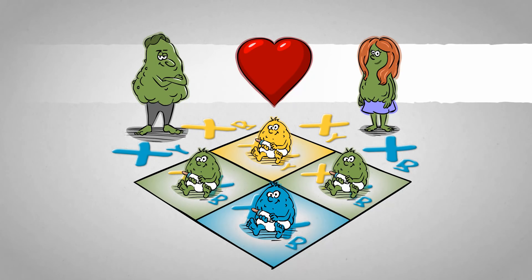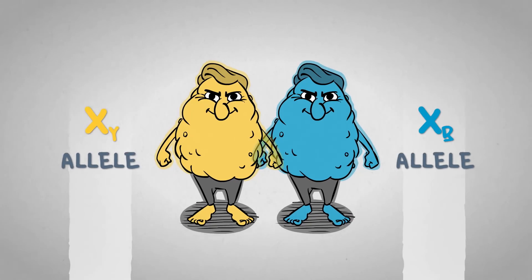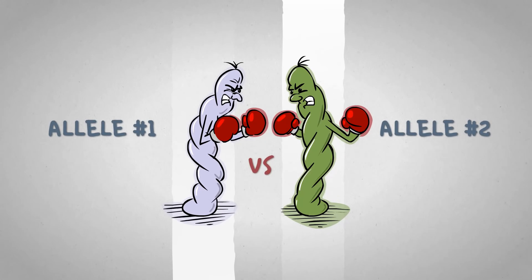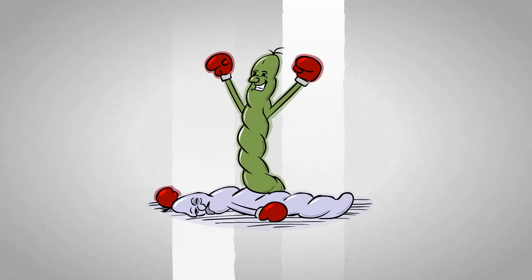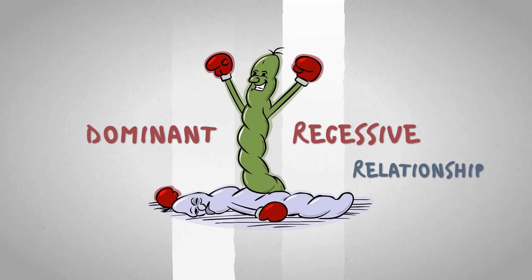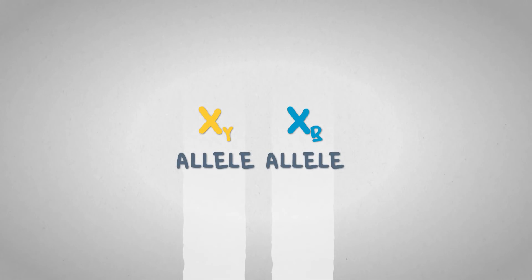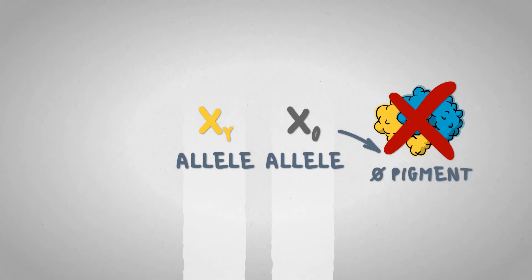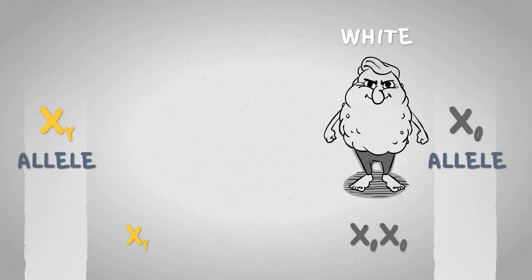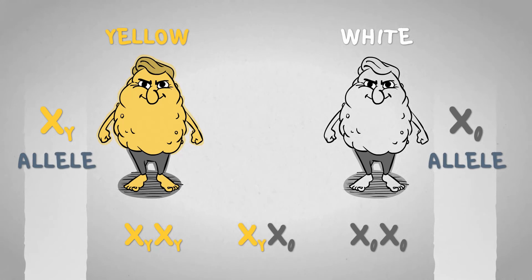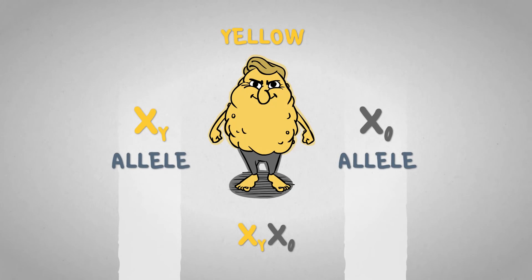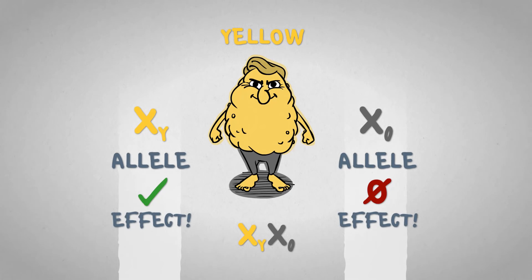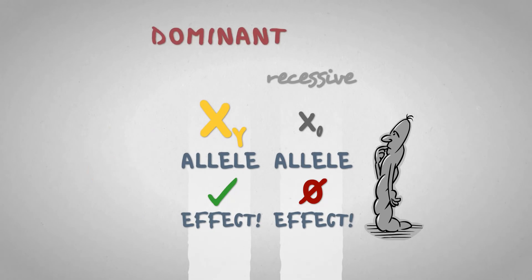Simple, right? Not so much in reality. Although two different alleles meeting usually results in a transitional phenotype, sometimes the alleles face off and the winner gets to dictate the phenotype. This is called dominant-recessive relationship. Let's swap X-B for another mutant allele, X-0, which produces no pigment. The genotype X-0/X-0 comes with white phenotype, X-Y/X-Y is yellow of course, and X-Y/X-0 is also yellow because there's no mixing of different pigments. In the latter case, the allele X-0 does not manifest in the phenotype, making it a recessive trait compared to the dominant yellow.